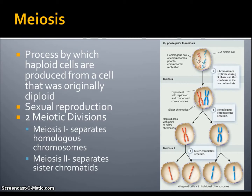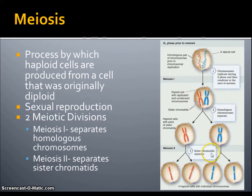Meiosis is the process by which haploid cells are produced from a cell that was originally diploid, which we can see in this diagram of meiosis. We start off with a diploid cell, and after going through two separate meiotic divisions — meiosis I, which first separates homologous chromosomes, and then meiosis II, which separates sister chromatids — we end up with a total of four haploid cells. Meiosis is also the basis for sexual reproduction.